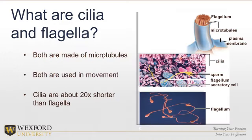Specifically regarding movement, we have cilia and flagella. Both of these are made of those larger microtubules and are both used in movement. Cilia tend to be shorter — as shown here, here are microtubules — and they allow movement. For example, your lungs have cilia to move things through and help keep the lungs clean. If they don't function right, we have a new pathology, a new disease. Cilia allow movement over the outer surface, the plasma membrane of the cells, and through the tissue to keep the lungs clean.